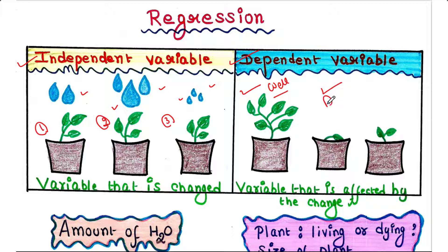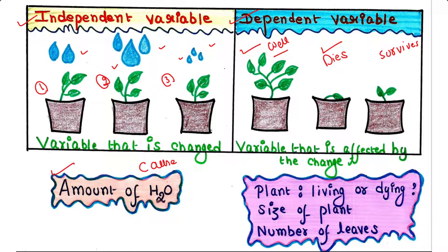When we are applying a moderate amount of water the plant grows well. When we are applying a large amount of water the plant dies. When we are applying little amount of water the plant survives but does not grow well. So what we can conclude here: the amount of water is the cause, which is called the independent variable — the variable that is changed. The size of the plant, number of leaves, or its survival are dependent variables, which are dependent on the amount of water.